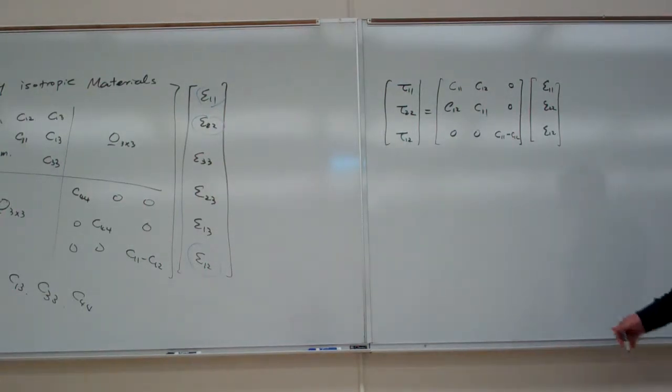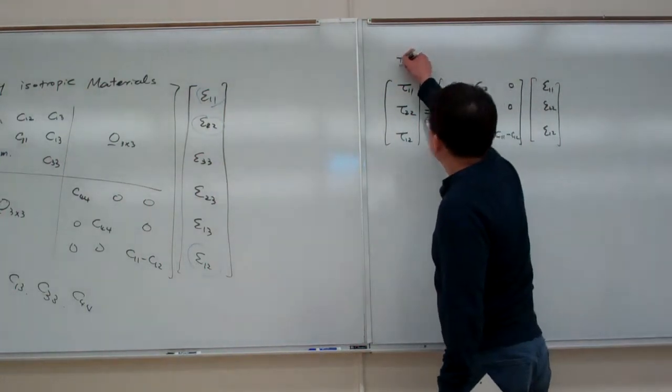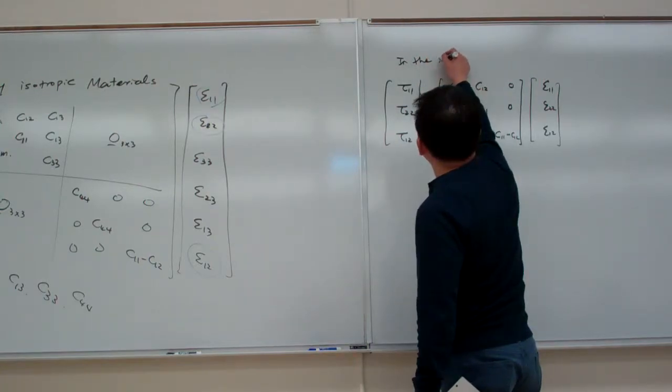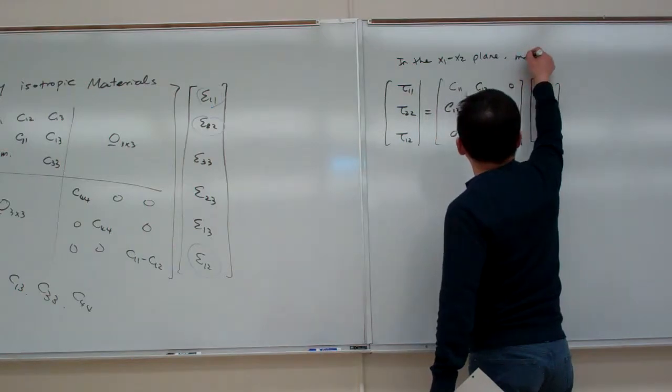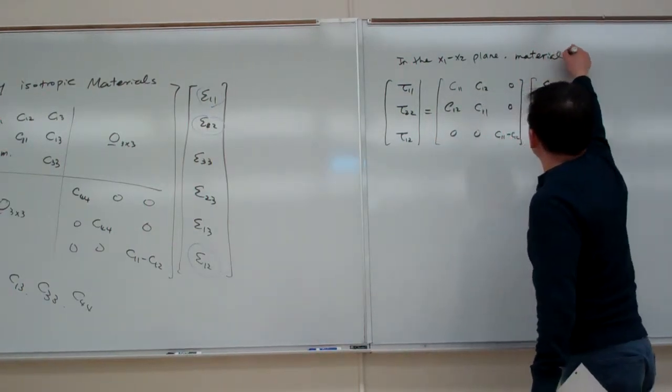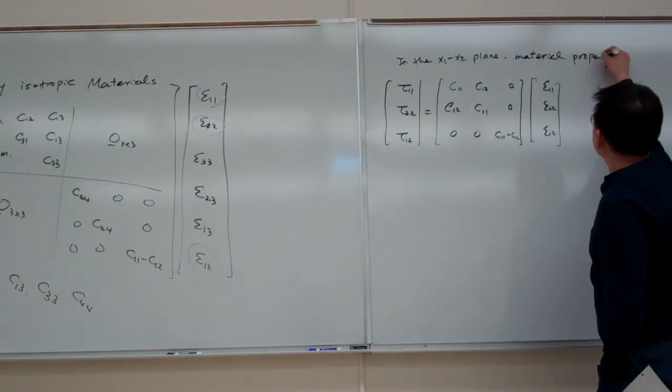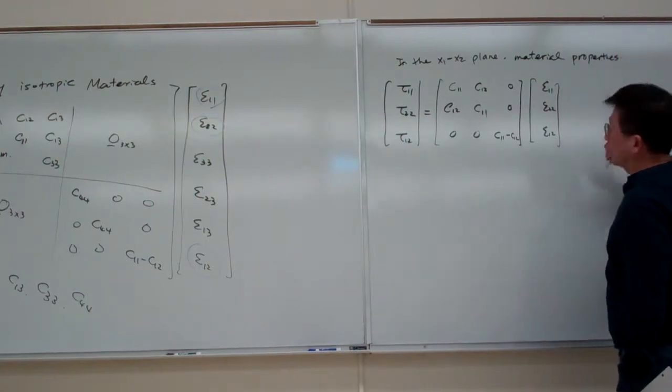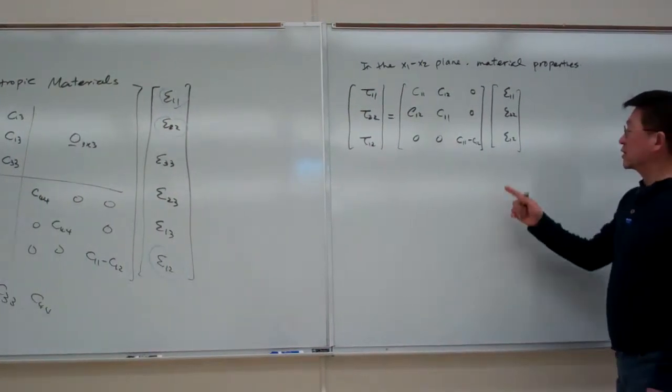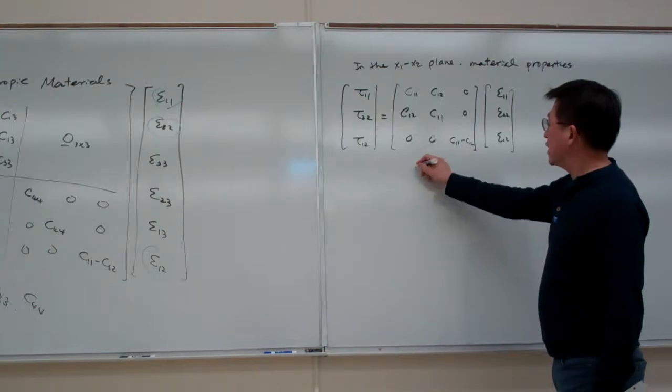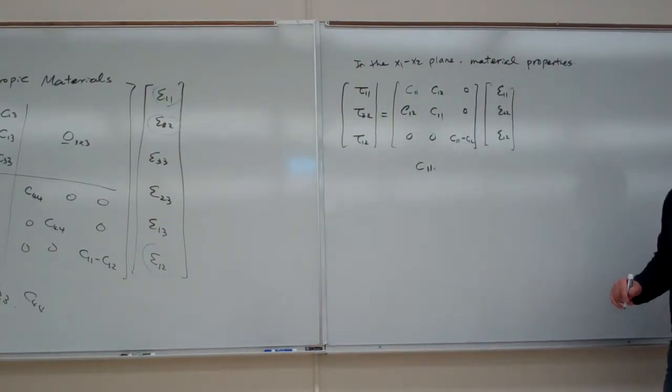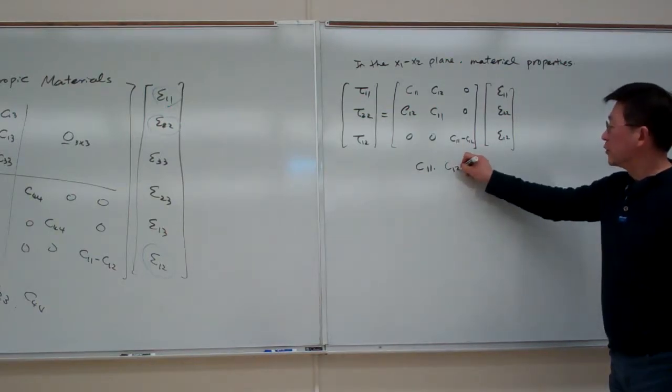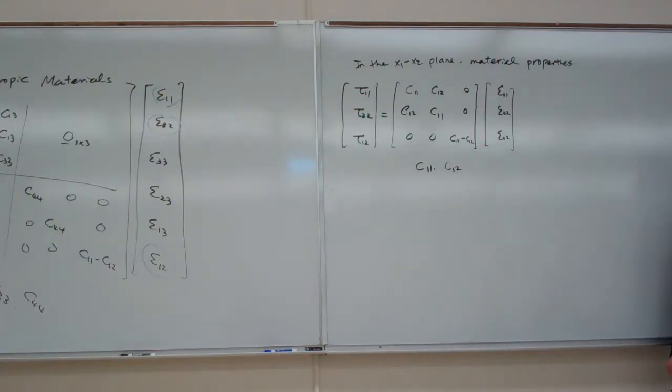So for this case, basically here you can see in the X1, X2, the material properties or books of relation, basically struck by these. Then we can see how many numbers here in the independent elastic constant, C1, 1, and C1, 2, only 2.